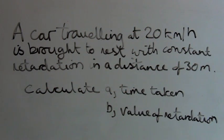The first example we're going to look at is a car traveling at 20 kilometers per hour is brought to rest with a constant retardation in a distance of 30 meters. Calculate the time taken and the value of retardation.